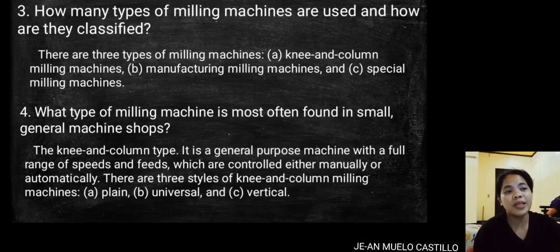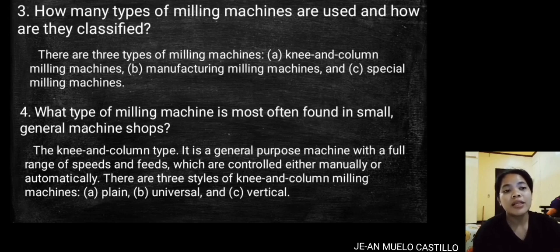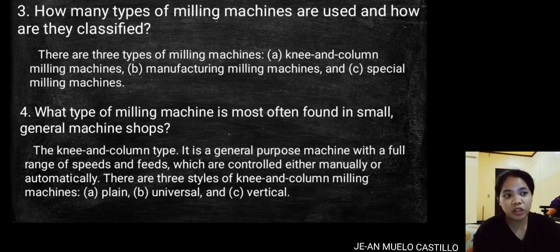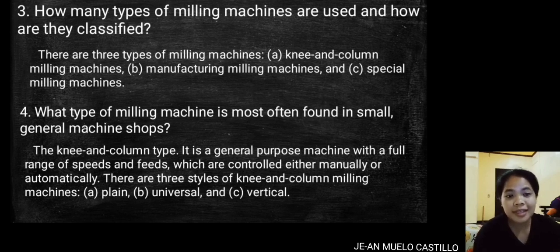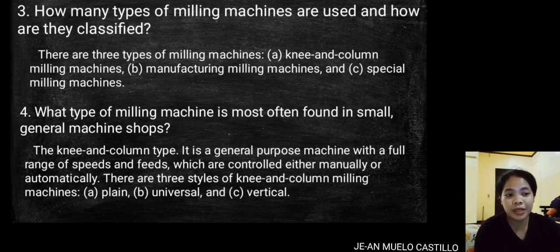How many types of milling machines are used and how are they classified? There are three types of milling machines: knee and column milling machines, manufacturing milling machines, and special milling machines. The knee and column type is most often found in small general machine shops. It is a general purpose machine with a full range of speeds and feeds, controlled either manually or automatically.